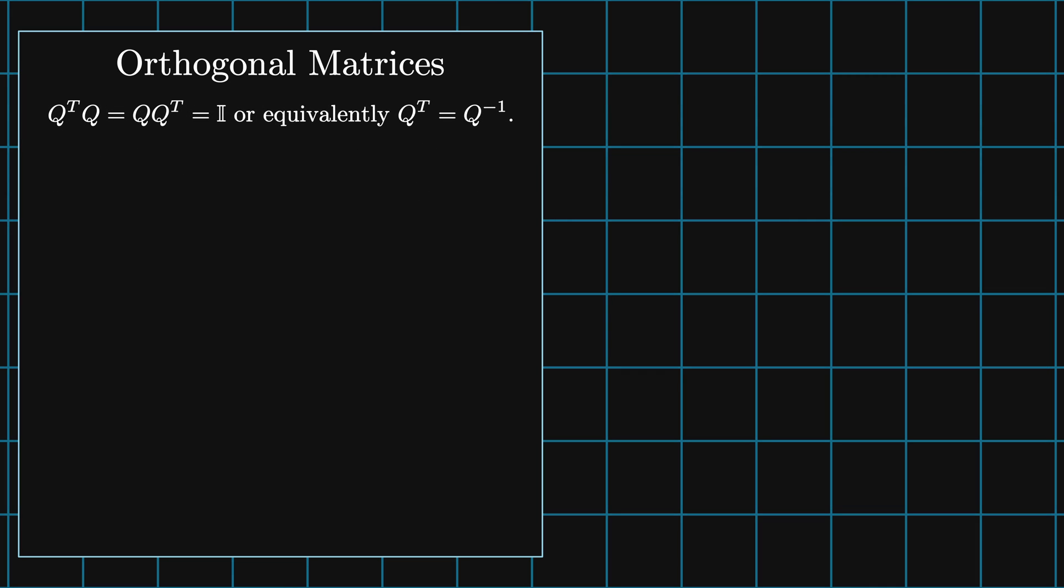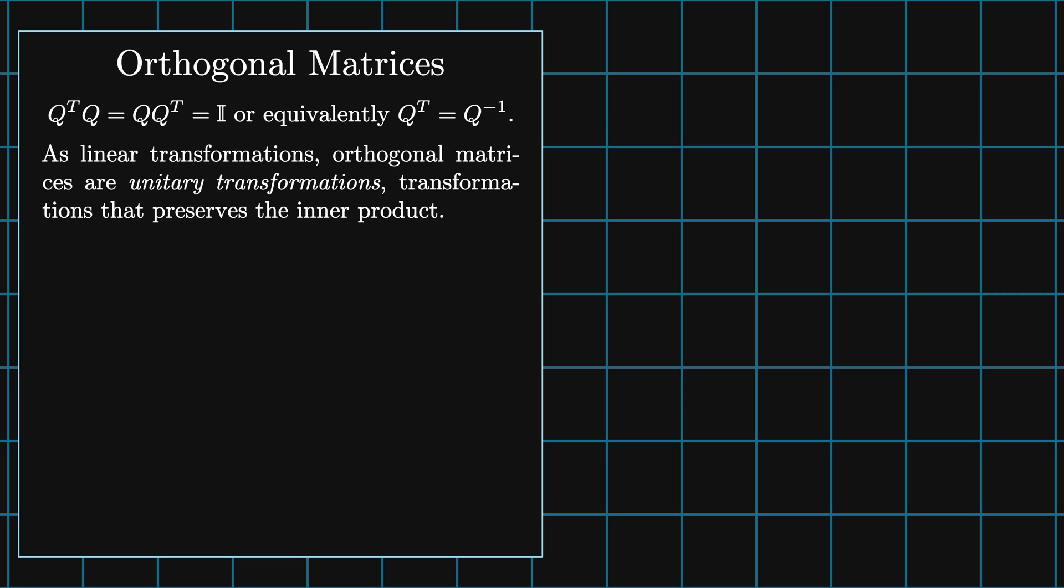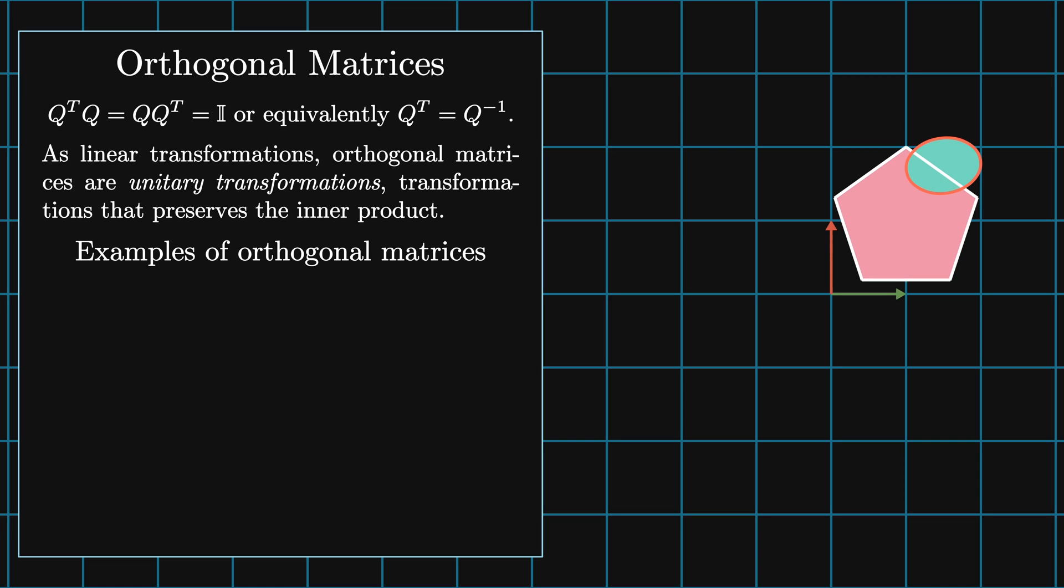Orthogonal matrices are a special kind of linear transformation called a unitary transformation. Unitary transformations are transformations that preserve the inner product. Here are a few examples of orthogonal two-by-two matrices and the effect of their linear transformation on the set of shapes.